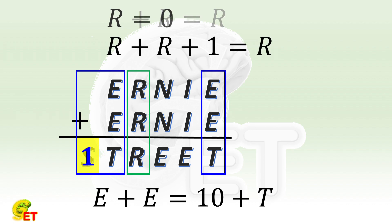R is equal to 0, or minus 1. Minus 1 does not work, so it can only be 0.